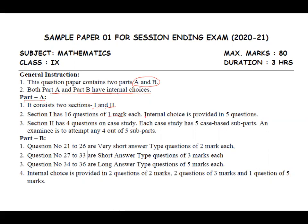Section 1 contains 16 questions of one mark and there will be five options. Section 2 contains four questions which are case study, which needs your thinking. Each case study has five case-based subparts and examiner has to attempt any four out of five subparts. So I am not going for question part B.